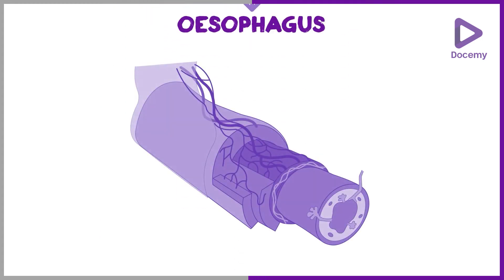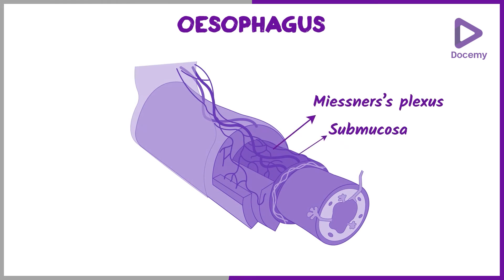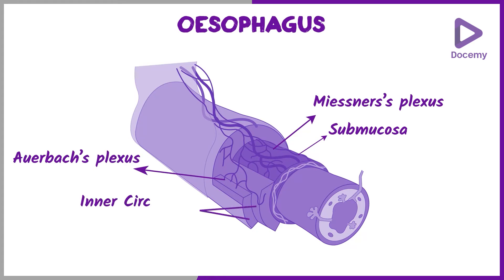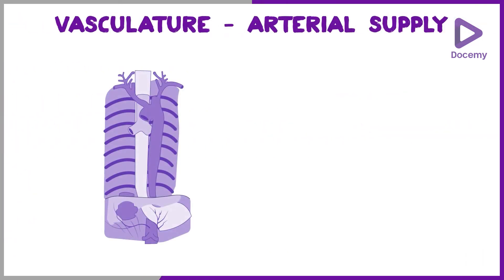It also has two plexuses: namely the Meissner's plexus, which lies in the submucosa, and the Auerbach's plexus, which lies between the inner circular muscles and the outer longitudinal muscles.